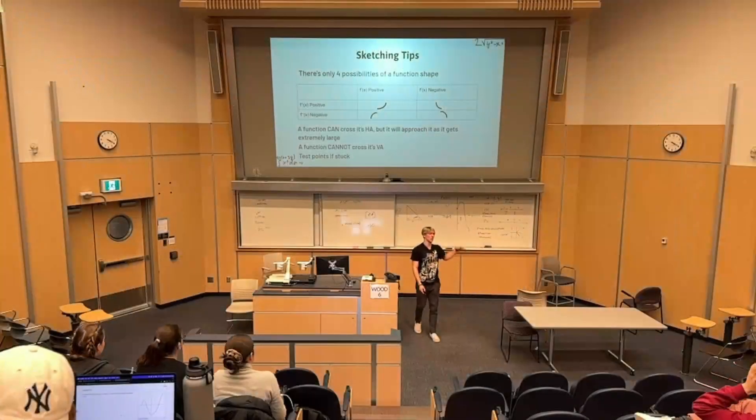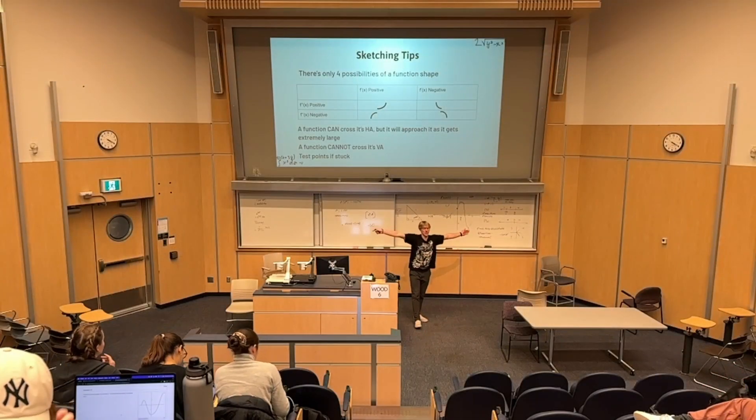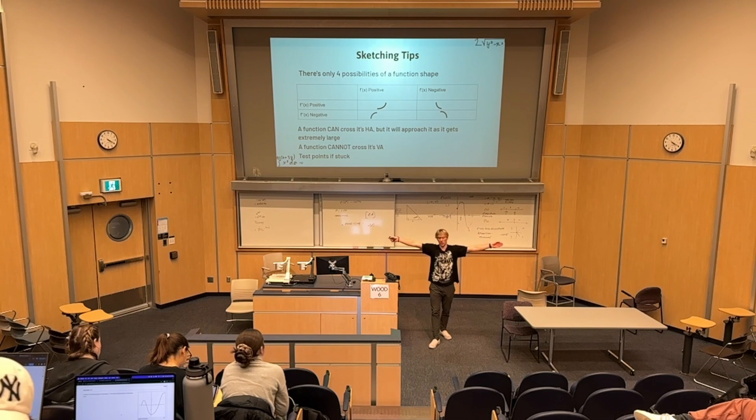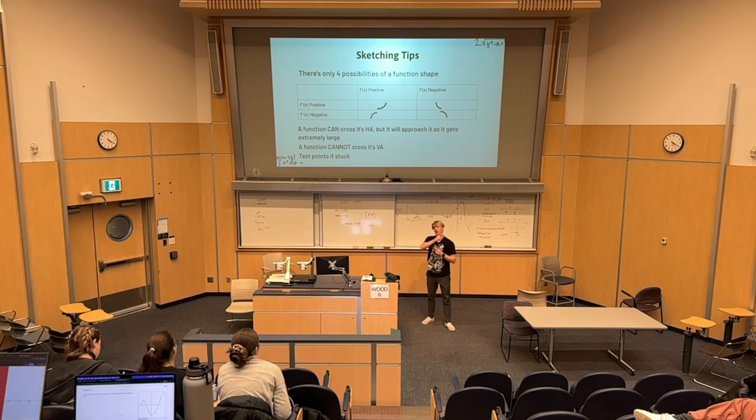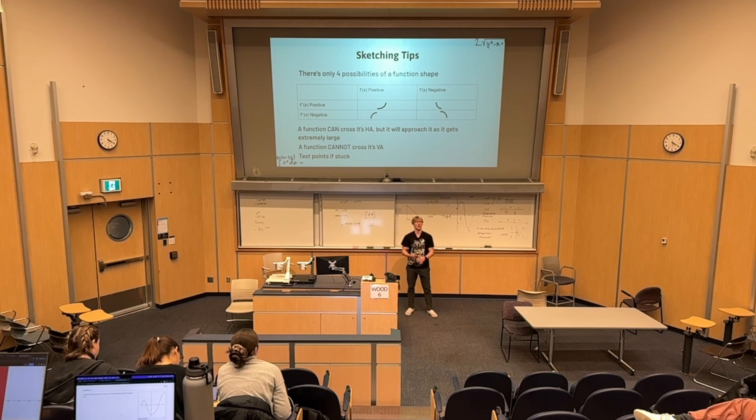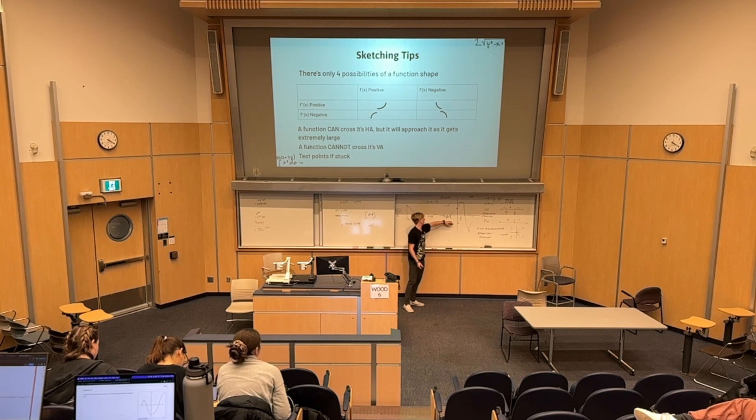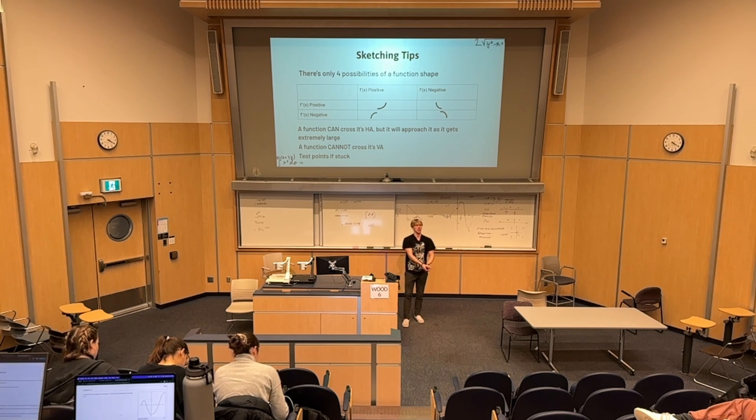A function can cross its horizontal asymptote, but as it gets very small or very large, so to negative infinity to positive infinity, it will approach it, but it cannot cross its vertical asymptotes. And if you're stuck, you can always just test a few points. So you can test what will negative 3 pi by 4 look like, what will the points look like. And then you have points of reference that you can connect to help with your sketch. That is always a foolproof plan.